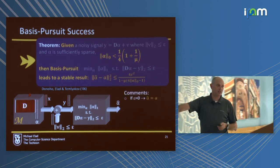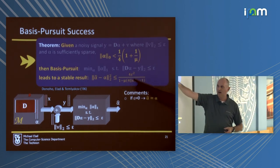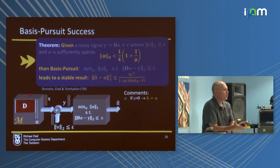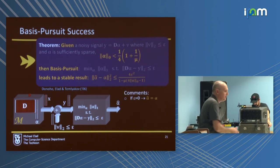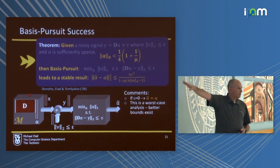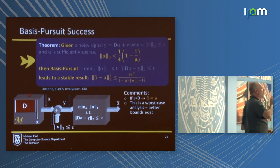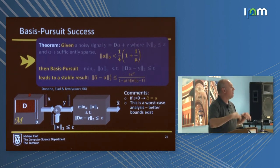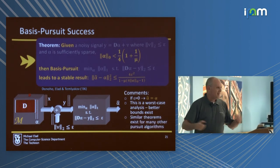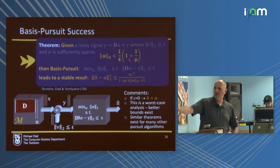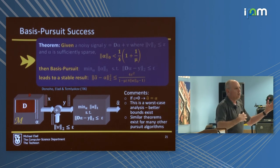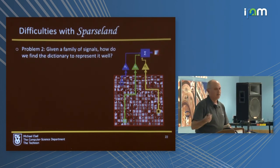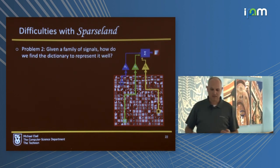The literature in our field is filled with hundreds of papers taking theorems like this and proposing them for any pursuit algorithm — even thresholding. Different terms of success and different behavior, but some success claims. Now here is another difficulty with sparse land: the dictionary. We have to bring it from somewhere. Someone working with face images, someone with finance data, a third with audio — everybody needs their own dictionary. You learn it. This is reverse engineering: you stand in front of the machine generating signals, take many of those signals, and try to figure out who is the dictionary that sparsifies all of them.